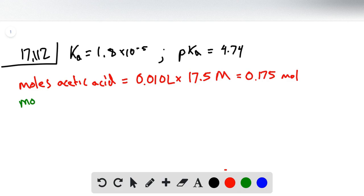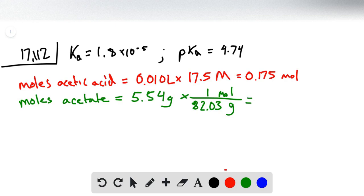So then we can calculate the moles of acetate as being equal to 5.54 grams, that's given the mass, and then we multiply by one over or we divide by the molar mass, and that gives us 0.068 moles.